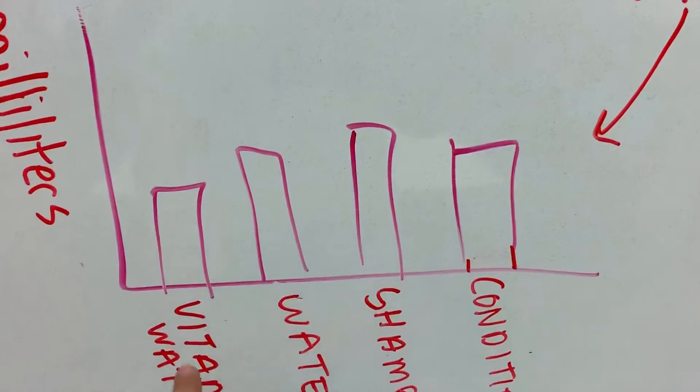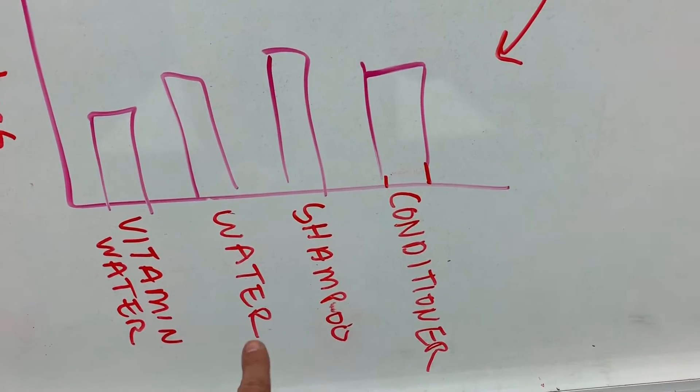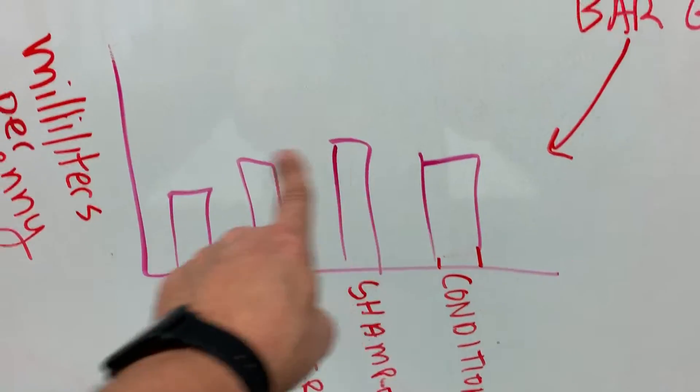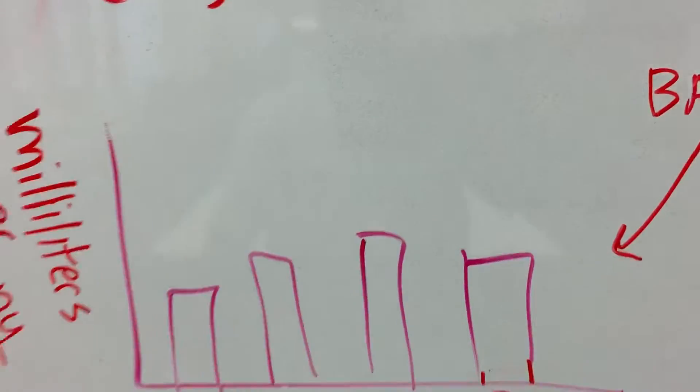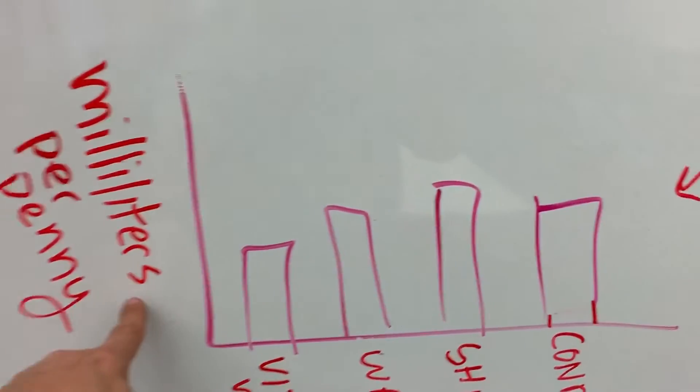So you have, say, vitamin water, water, shampoo, or conditioner, and you're making a bar graph. Again, you're going to have to figure out your own title, but you do need a title and labels on the axis.